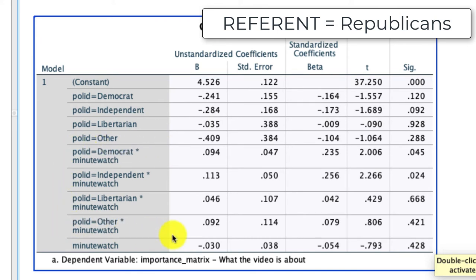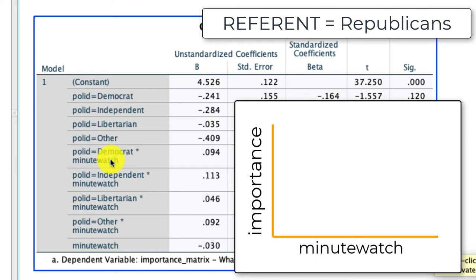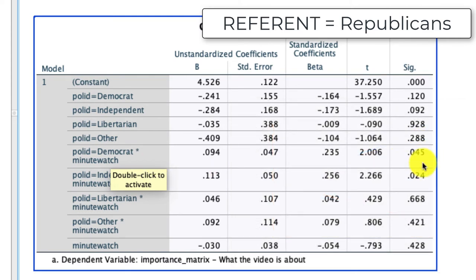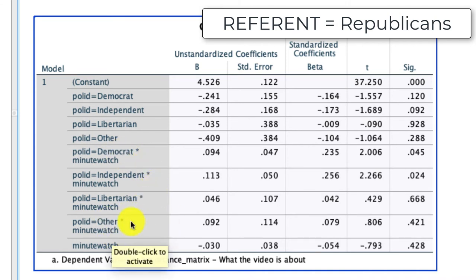Our four interaction terms are right here. For Democrats relative to Republicans, they show the differential influence of minutes watched on the importance question. In other words, if we plot minutes watched on the x-axis and importance on the y-axis, the slopes will be different between Democrats and Republicans. I know they're significantly different because the significance level is below 0.05. That's also true for independents versus Republicans at 0.024, but not true for Libertarians versus Republicans, and not true for others versus Republicans.